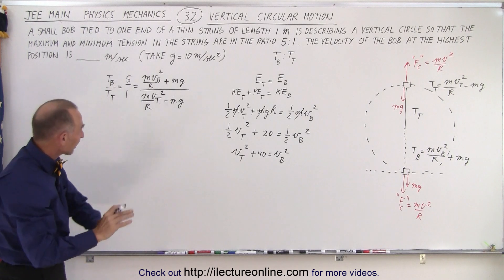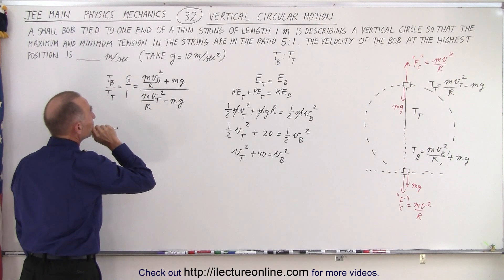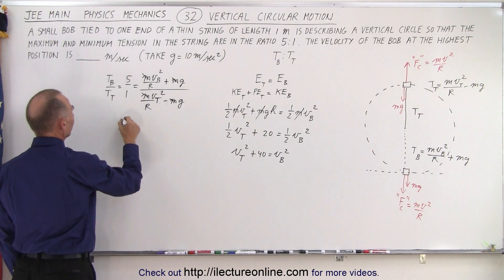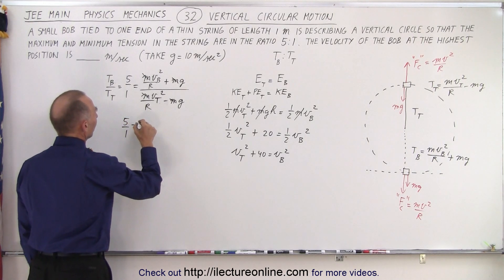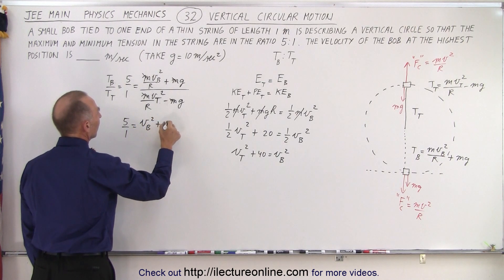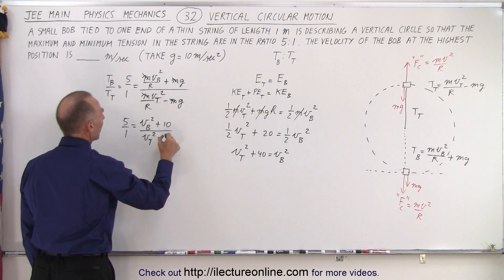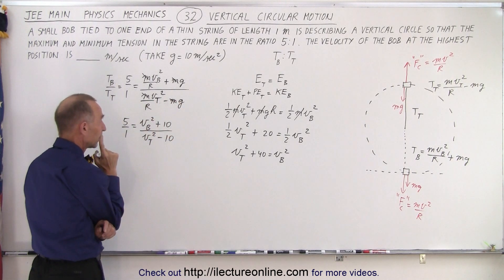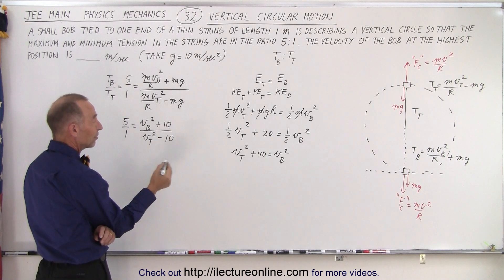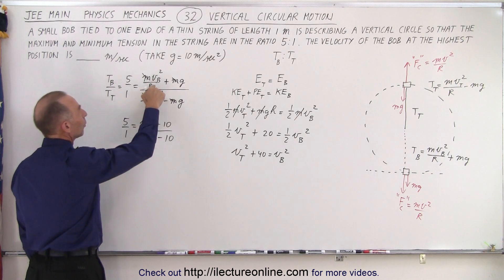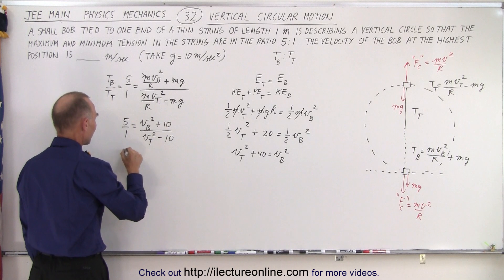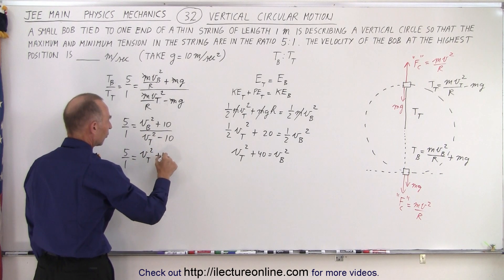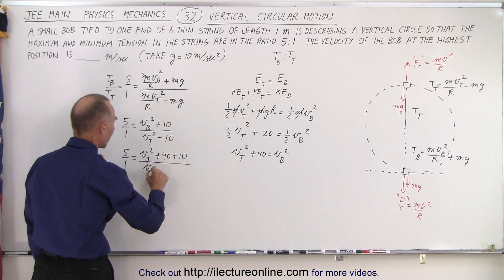Okay, very nice. Now simplifying things a little bit because we know that r is equal to 1. And we can cancel all the m's everywhere. And r is 1. So we can say that 5 to 1 is equal to v bottom squared plus 10 over v top squared minus 10. And then notice we have a relationship between v top and v bottom right here. So v bottom squared is really v top plus 40. So we can get rid of the r. So now we have 5 over 1 is equal to v bottom squared is the same as v top squared plus 40 plus 10 divided by v top squared minus 10.